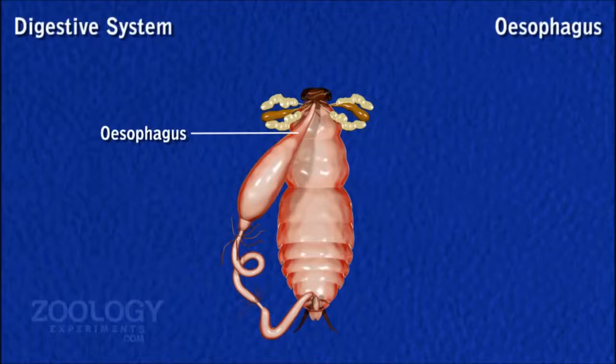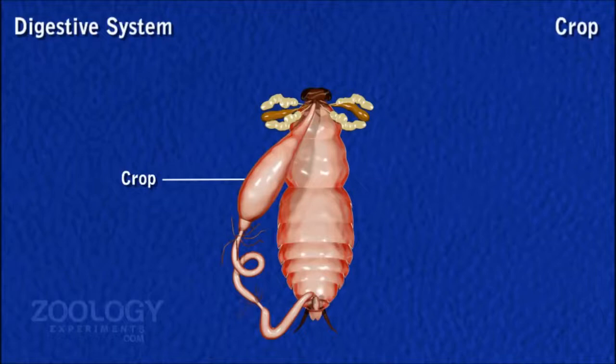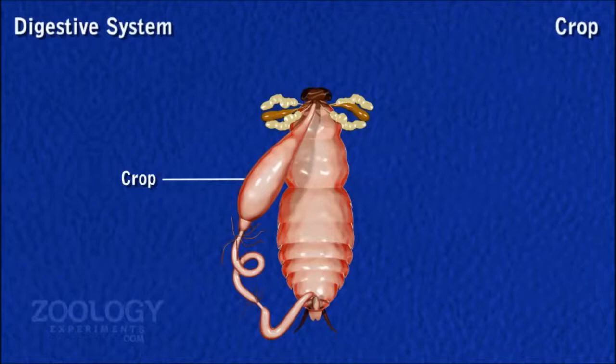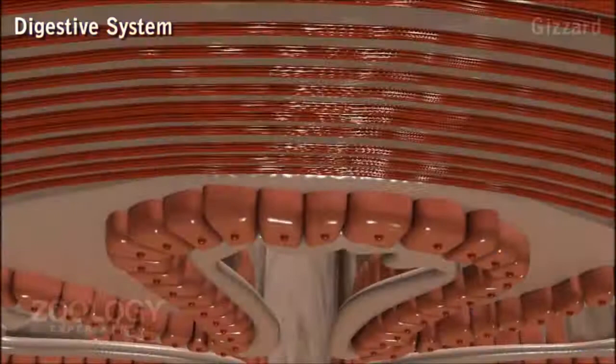The esophagus runs through the neck and enters the thorax to merge with the crop. Crop is a large, thin-walled, pear-shaped sac covering the major part of the abdominal segment. It is the largest part of the foregut. Its internal epithelial and cuticular lining is very much folded, and its outer surface is covered by a network of trachea. The crop acts as a reservoir for storing food.